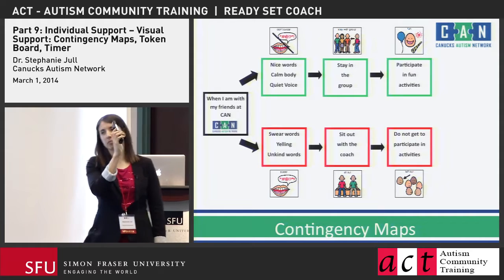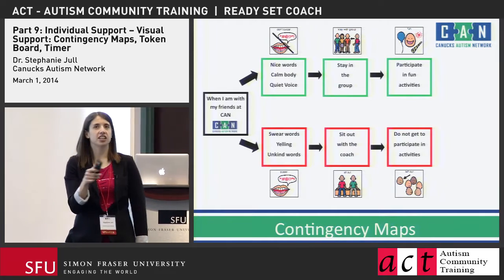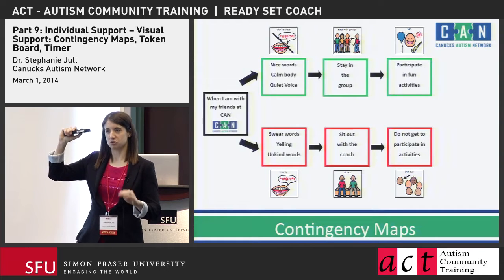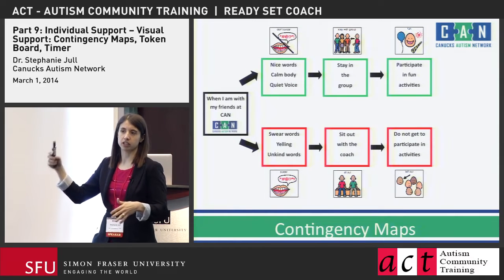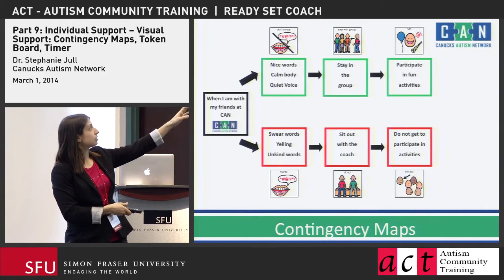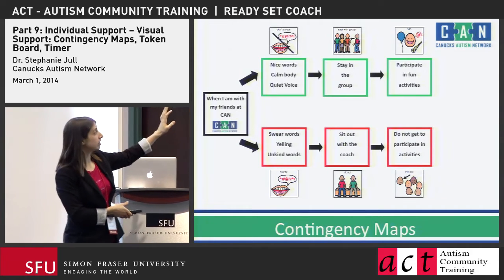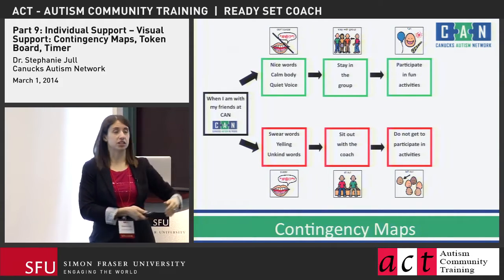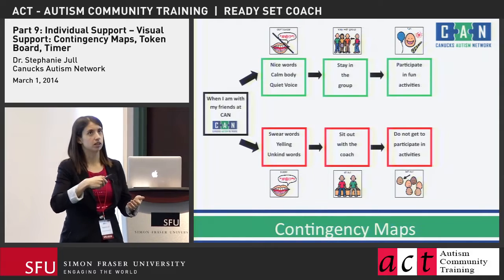We have this kid — parents fully on board with this, collaborative in the development of it. He gets very excited and when he gets excited, he loses his filter even more than usual and yells, sometimes swears, and says things that are inappropriate. This is a 14-year-old kid. So we created a visual to show him: when I'm with my friends at camp, I need to use nice words, calm body, quiet voice, stay with the group — meaning don't wander away — and then I get to participate in fun activities. However, if I'm swearing, yelling, or using unkind words, I have to sit out with the coach for a little while. You can use this as a front-loading strategy.